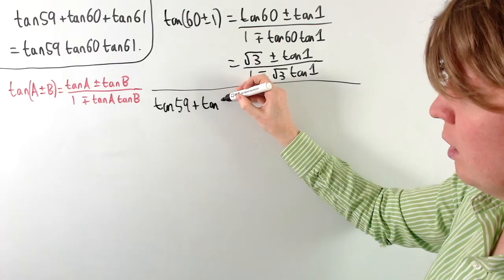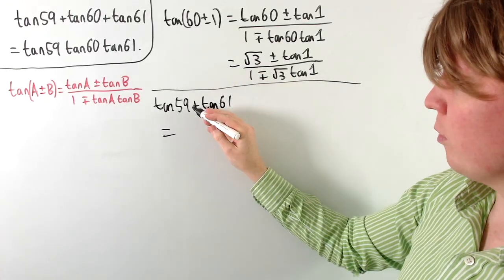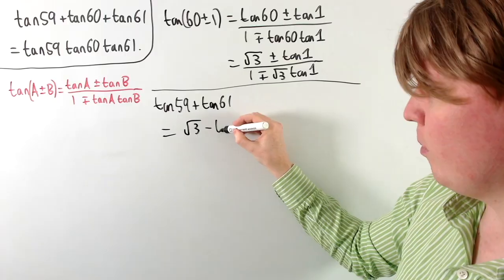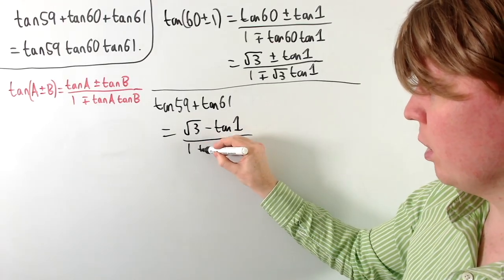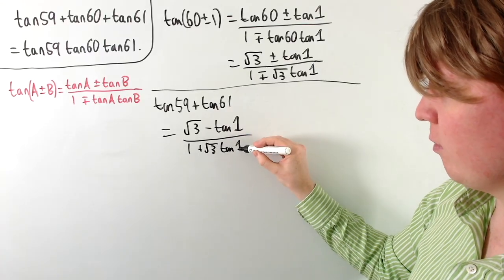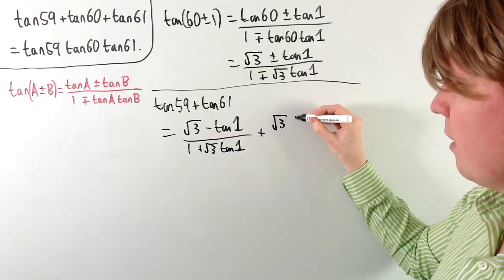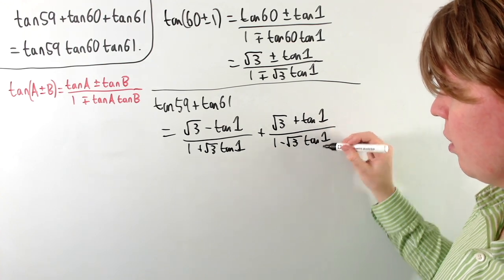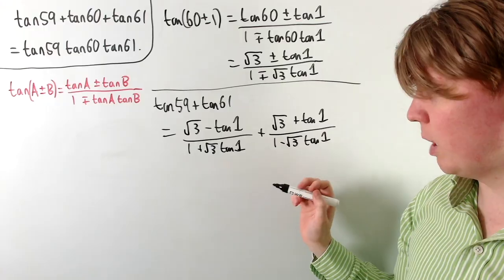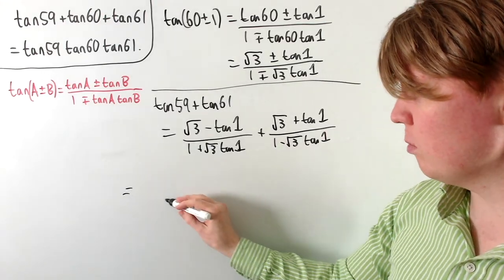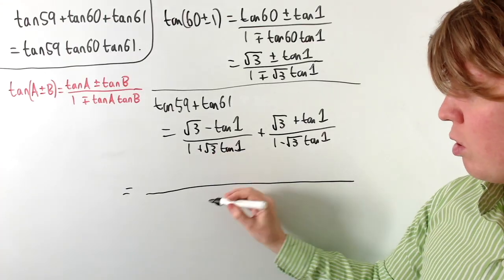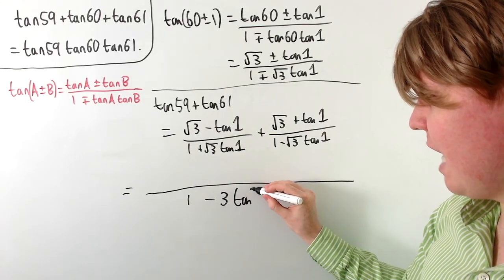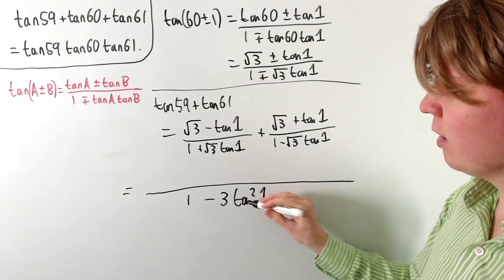For tan59 + tan61, tan59 gives us (√3 − tan1) / (1 + √3·tan1) and tan61 gives us (√3 + tan1) / (1 − √3·tan1). To add these, we multiply out the denominators and we actually get a difference of two squares expression, giving us a nice denominator: 1 − 3·tan²1.